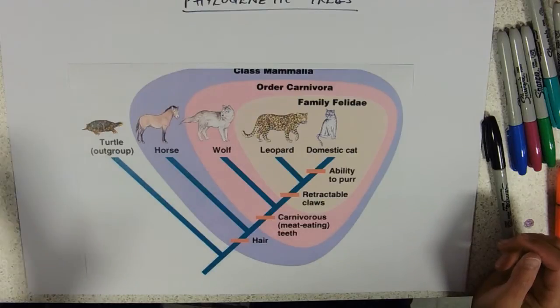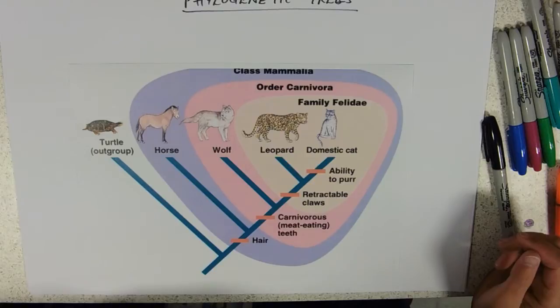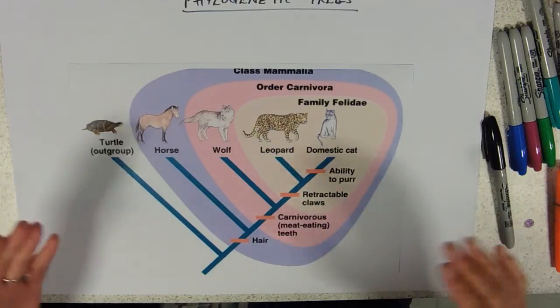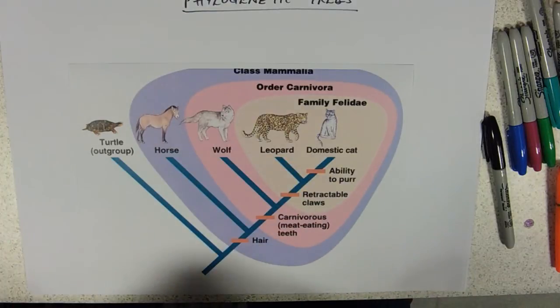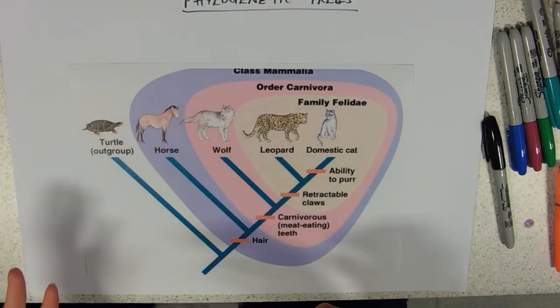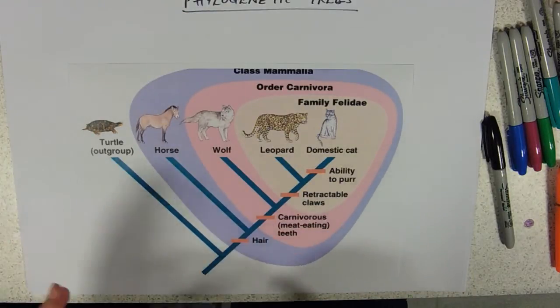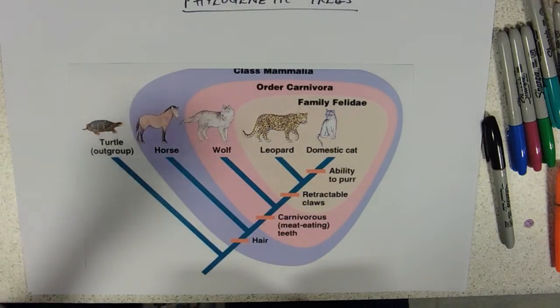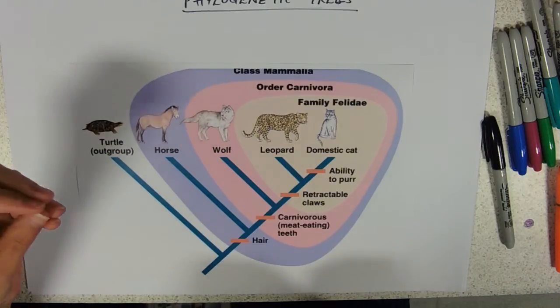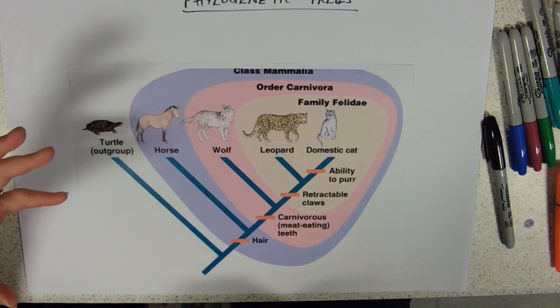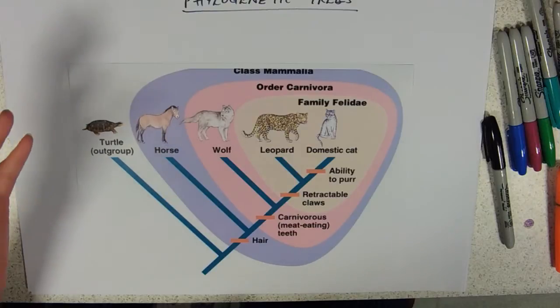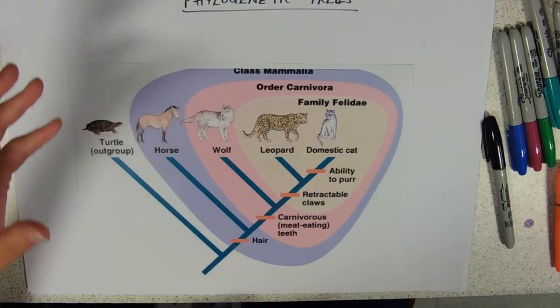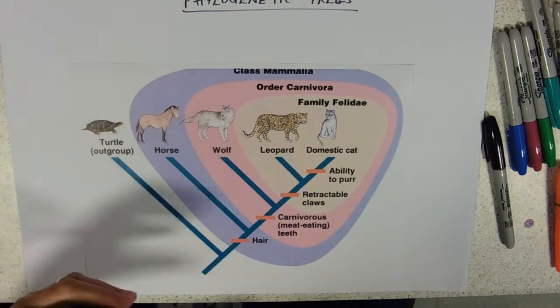Remember when we learned about the KPCOFGS - you're assuming that everything in the same kingdom is more closely related to the things in that kingdom than to something else. All the animals are more closely related to each other than they are to plants. And then within that kingdom, the members of a single phylum, like the chordates, the things with backbones, they're all more closely related to each other than they are to the things without backbones.